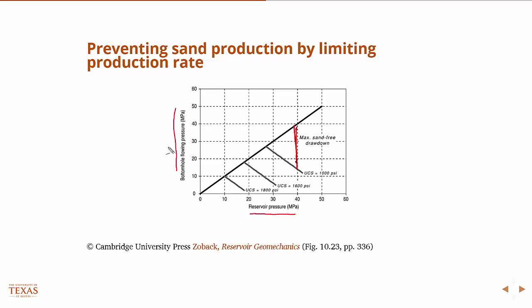The bottom hole flowing pressure is usually controlled with surface chokers. We choke the ability of the well to flow back to the surface or vent to the atmosphere. Through choking at the surface we can control the bottom hole flowing pressure, and the difference between that and the reservoir pressure controls the production rate. If you're getting a lot of sand production, you can choke it off more so that you don't have such a drawdown.